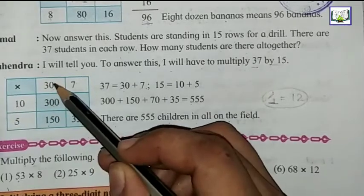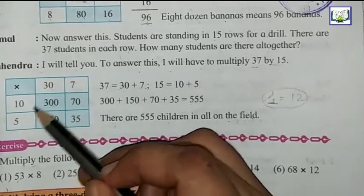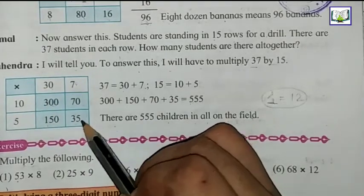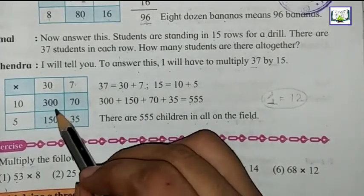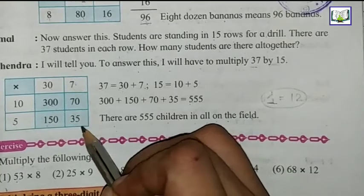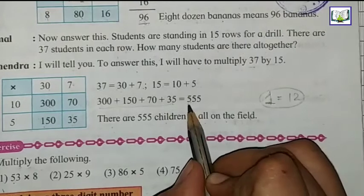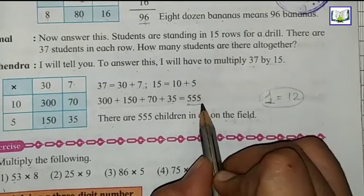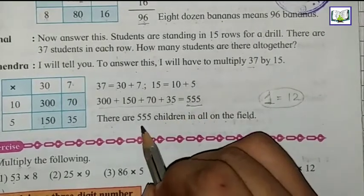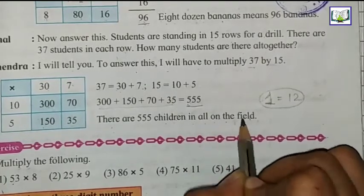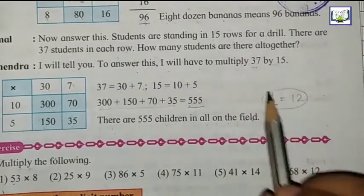5 times 0 is 0, 5 times 3 is 15, which is 150. 5 times 7 is 35. The answer is 300, 150, 70, and 35. We will add them all plus and we will get the answer that is 555. So there are 555 children in all on the field.